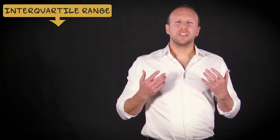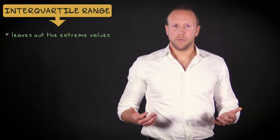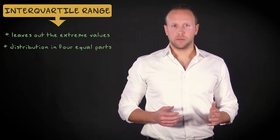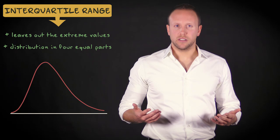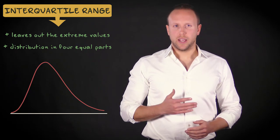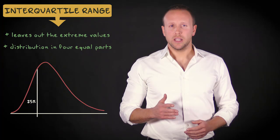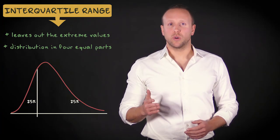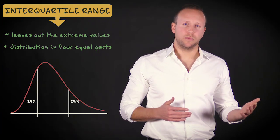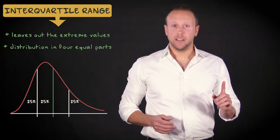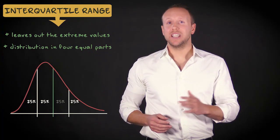Another measure of variability, the interquartile range, is a better measure of dispersion because it leaves out the extreme values. It basically divides your distribution in four equal parts. So, if your distribution looks like this, you divide the scores in such a way that the 25% of your lowest scores are below this value, and the 25% of your highest scores are above this value. We also have 25% of our scores here, and 25% of our scores here.